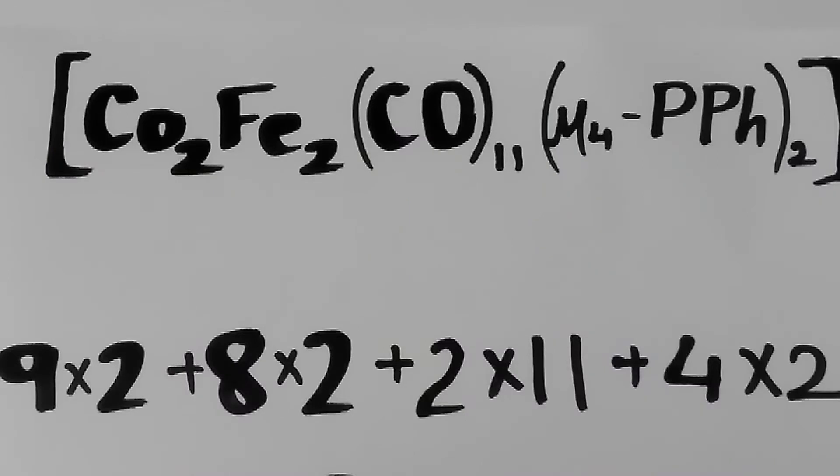Number of valence electron for cobalt is 9, which is multiplied by 2, because we have 2 cobalt atoms. The valence electron for iron is 8, it is multiplied by 2, because we have 2 iron atoms.